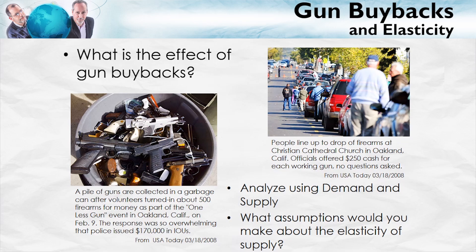The question is: can these buybacks be effective? To answer that, we need to know something about demand and supply — in particular, what assumptions would make sense about the elasticity of supply. Is the supply curve of guns to a city like Washington, D.C. or Oakland, California going to be inelastic or elastic? Bear in mind that the United States as a whole has hundreds of millions of guns, and that guns continue to be produced, manufactured, bought, and sold every day. So what assumptions would you make about the local supply curve of guns in a city like Washington, D.C.?